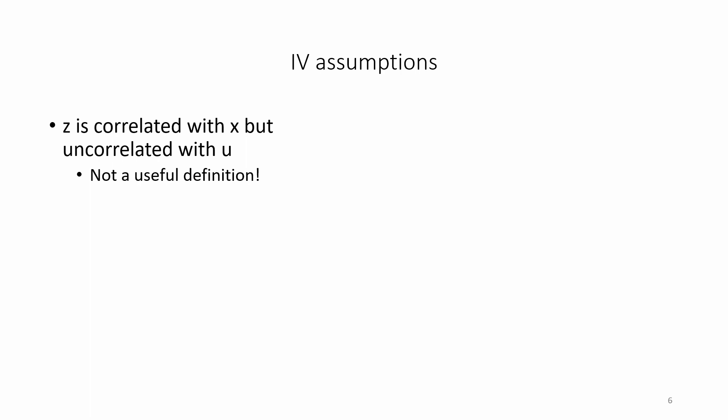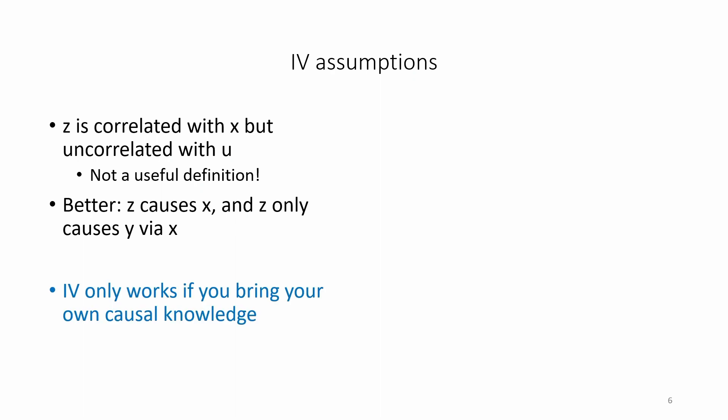That's why I don't like the usual definition of IV in terms of having a variable z that is correlated with x but uncorrelated with u. It gives the impression that you can use knowledge of correlations to obtain knowledge of causality, which is misleading and wrong. Instead, you need to bring causal knowledge when applying IV. Discussing IV assumptions with the language of correlations is not helpful. Instead, it would be better to say z causes x and z only causes y via x. So, IV only works if you bring your own causal knowledge.